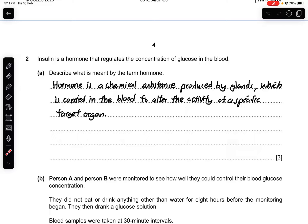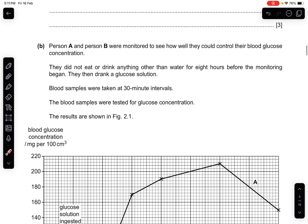Question 2: insulin is a hormone that regulates the concentration of glucose in the blood. Part A: describe what is meant by the term hormone. This is a very important definition mark — please memorize this. A hormone is a chemical substance produced by the glands, which is carried in the blood to alter the activity of a specific target organ. You can write something similar but it must carry the same meaning, otherwise it will be zero marks.